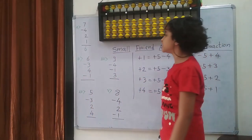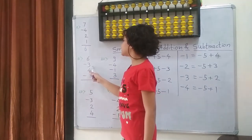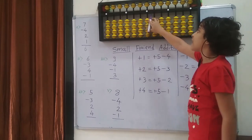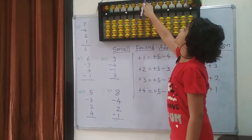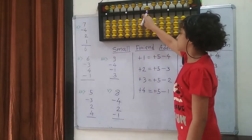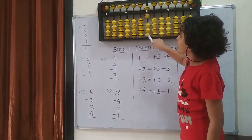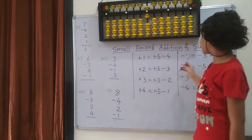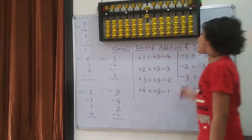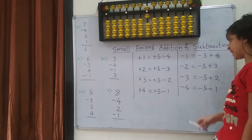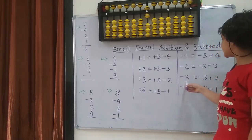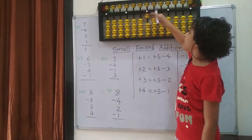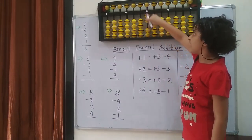Next question: 6 minus 3 plus 4 minus 1. So first on the backwards, I am going to put 6 — 5 and 6. Then I am going to minus 3. So I cannot, because I don't have any available bits. So I am going to use the subtraction formula, which is: minus 3 equals to minus the 5 plus the 2. So minus the 5 and plus the 2. So 1 and 2.